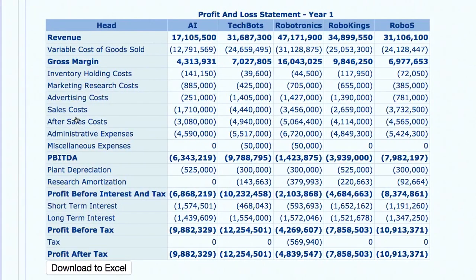Let's look at the annual results of this industry, starting with the P&L. The company with maximum revenue is Robotronics with 47,471 lakhs, and the least revenue is AI with about 17 million. Looking at the bottom line, the company with maximum profit or least losses is Robotronics with minus 48 lakhs, and the maximum loss is Tech Bots at about 122 lakhs, or 1.2 crores.